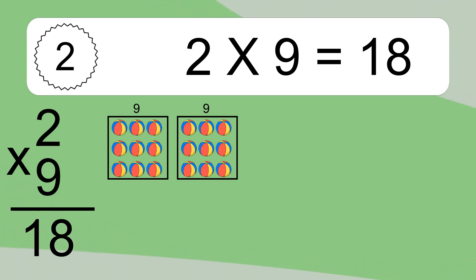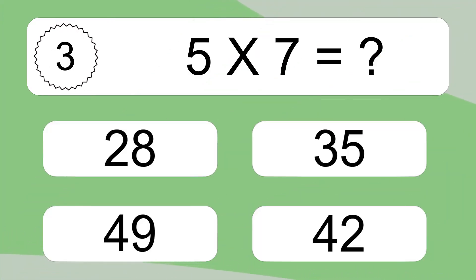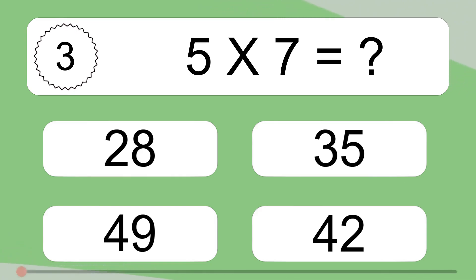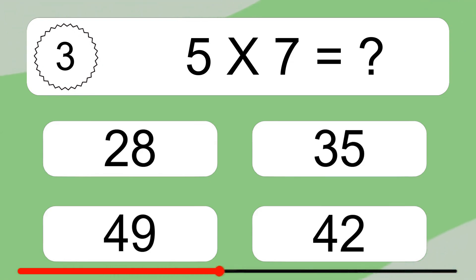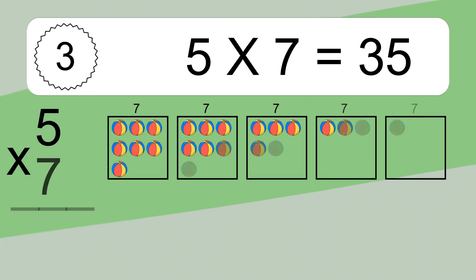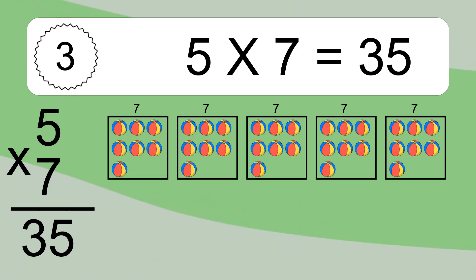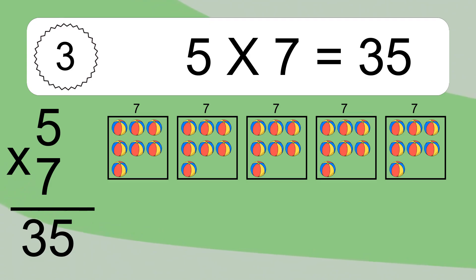5 times 7 equals what? We have 5 boxes, and each box has 7 colorful balls inside. If you count all the balls in all the boxes together, you will have 5 times 7 balls. This equals 35 balls.